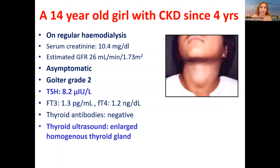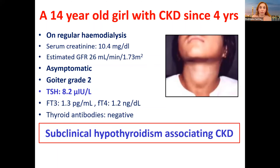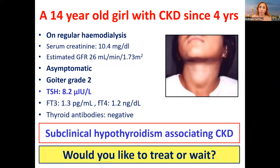Her TSH is 8.2, T3 and T4 are fine, thyroid antibodies negative. Ultrasound revealed a large homogeneous thyroid with nothing abnormal. This is subclinical hypothyroidism associated with chronic kidney disease. Would you treat or wait? Bear in mind she doesn't have any symptoms and TSH is 8.2.